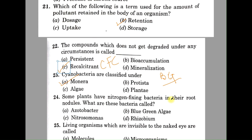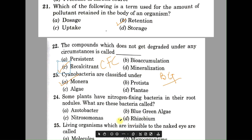Question number twenty-four: some plants have nitrogen-fixing bacteria in their root nodules. What are these bacteria called? A: Azotobacter, B: blue-green algae, C: Nitrosomonas, D: Rhizobium. The correct answer is D, Rhizobium.